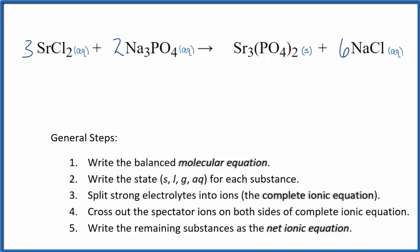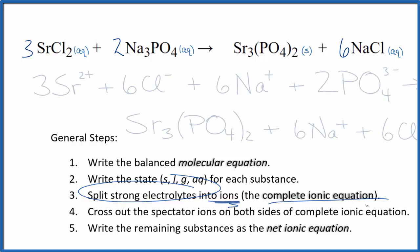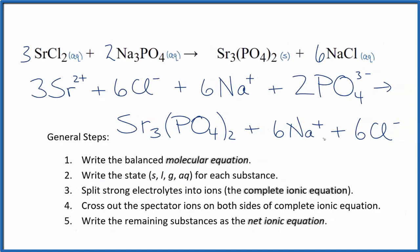Now that we have the states, we can split the strong electrolytes into their ions for the complete ionic equation. That looks like this. So this is our complete ionic equation. We split up all the aqueous compounds, but the solid here, this strontium phosphate, we don't split solids apart in net ionic equations. We kept that together.